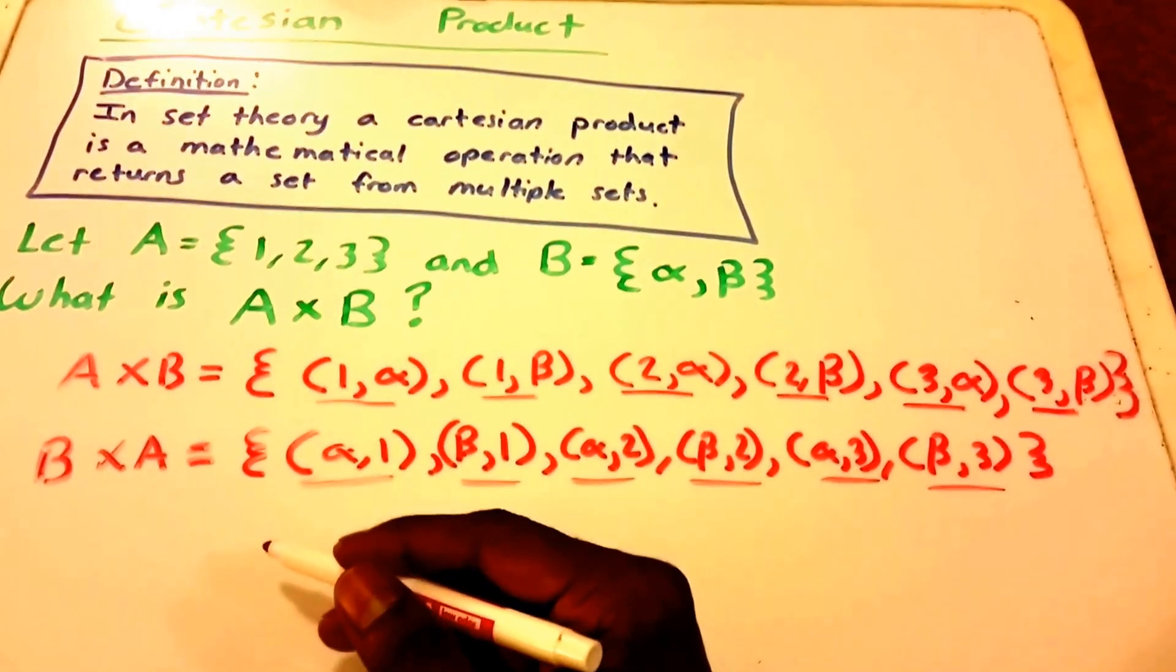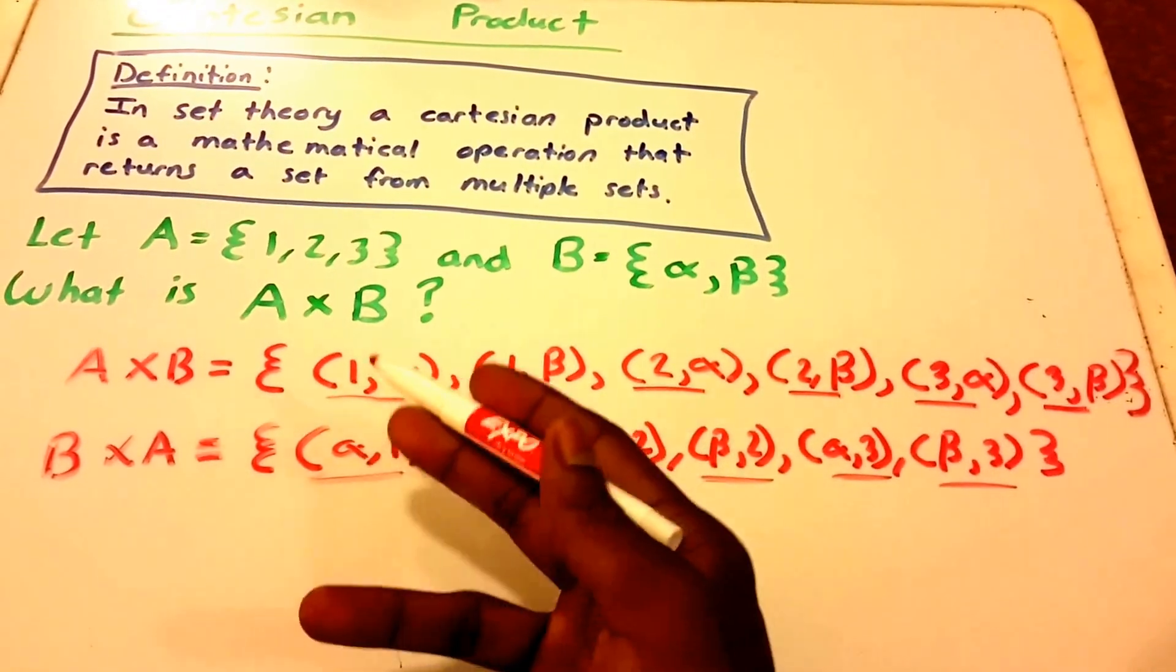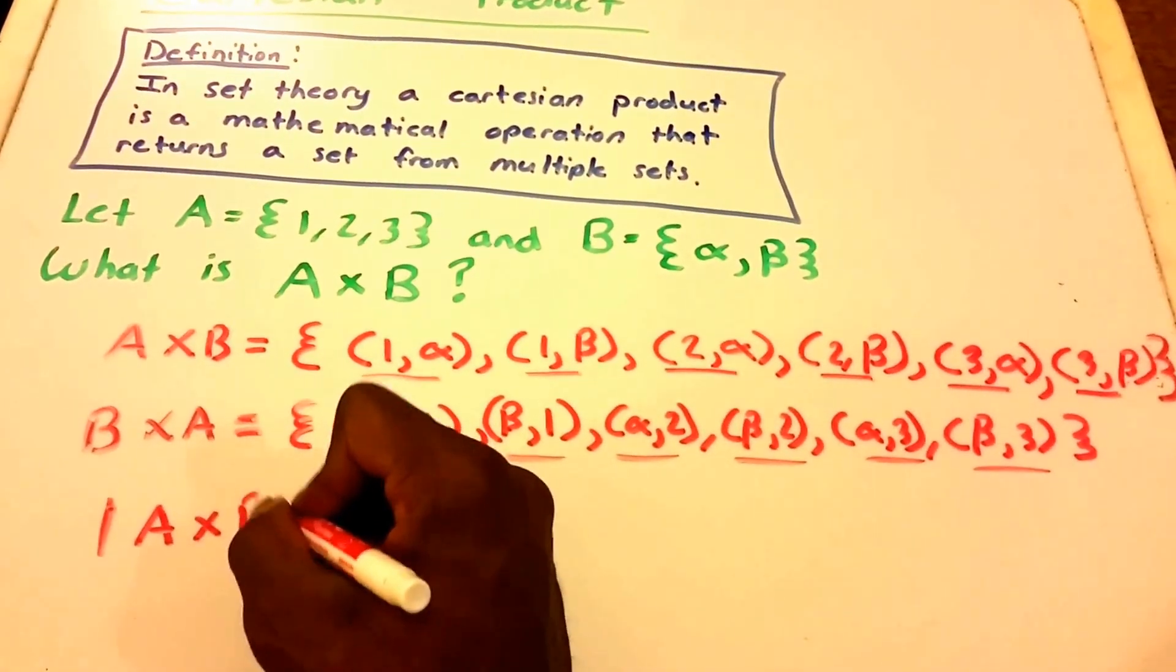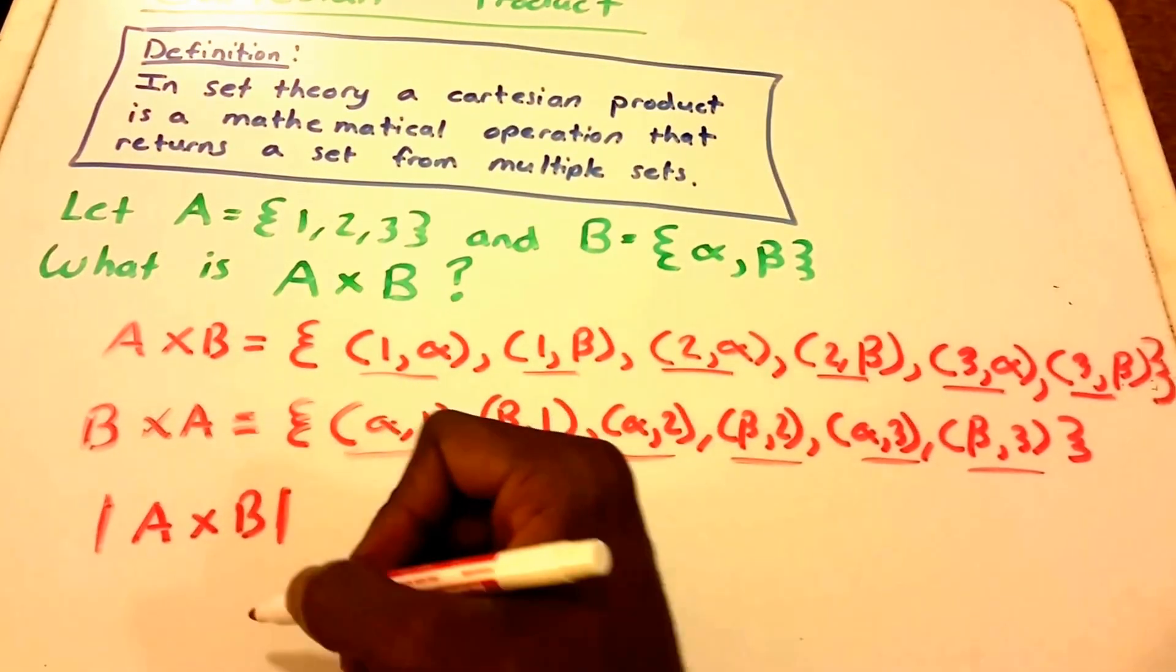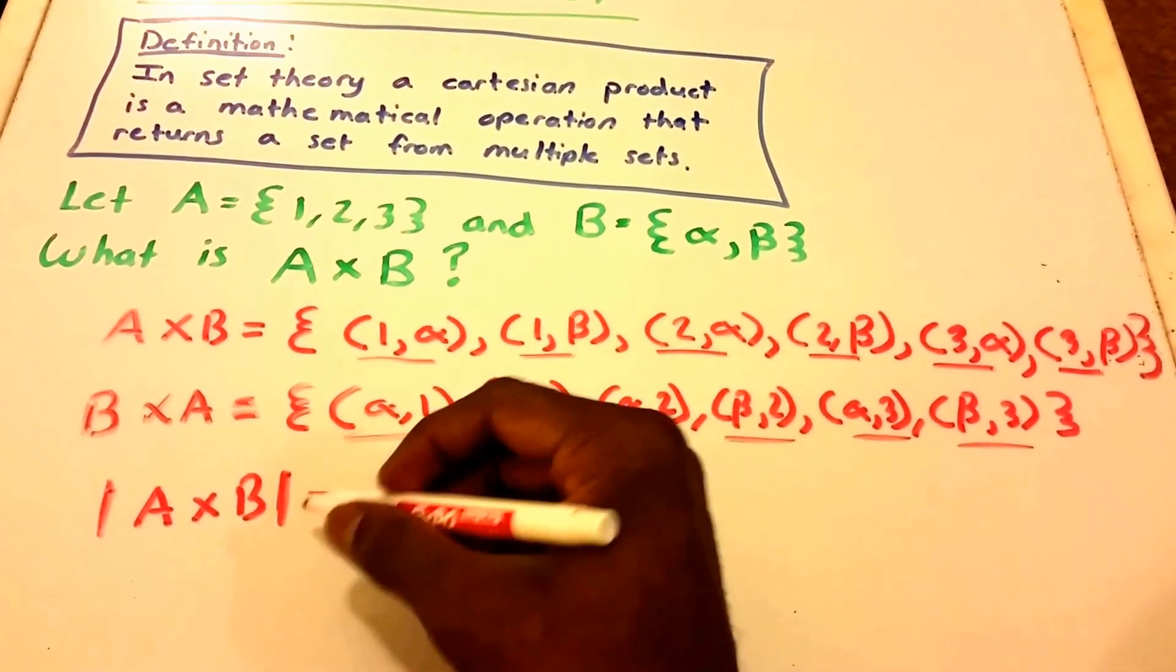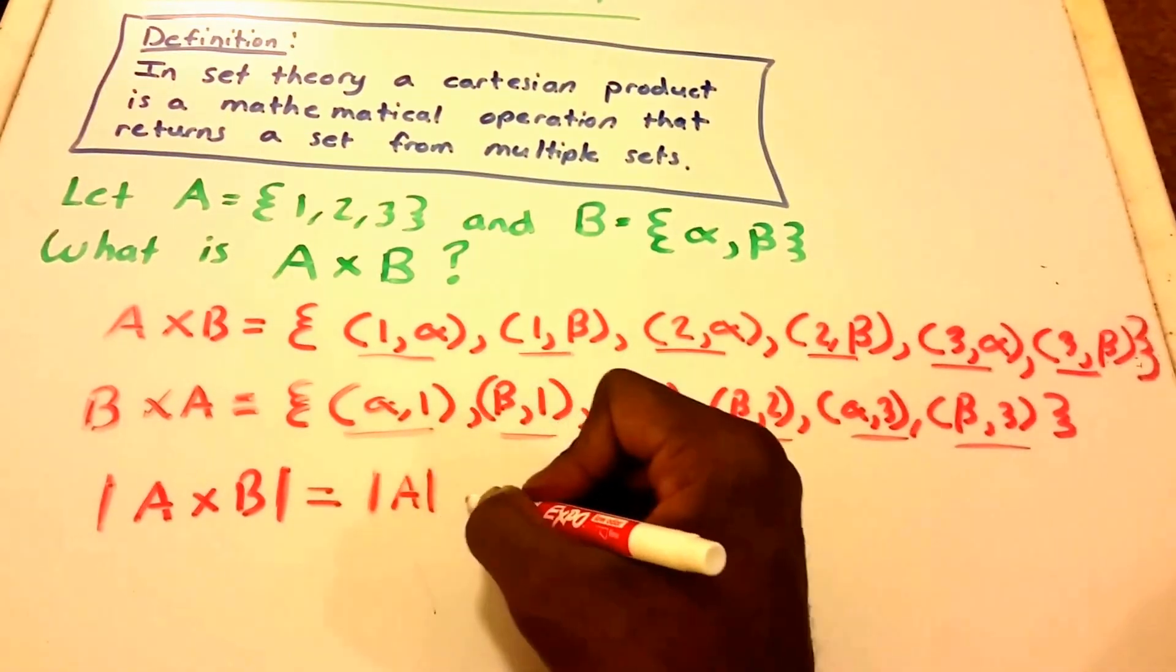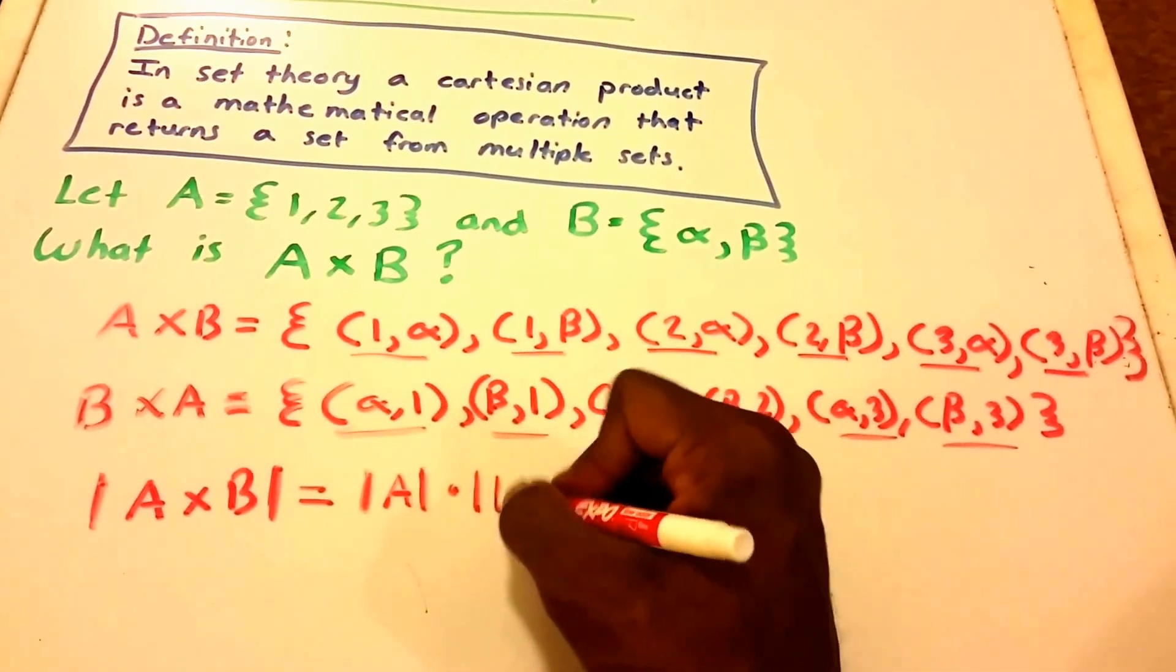And the last thing I want to talk about in this video is the cardinality of this set. So cardinality, you might think that this is absolute value of the Cartesian product A and B, but it's the cardinality. And it's equal to the cardinality of set A—looks like I'm running out of marker here—times the cardinality of set B.